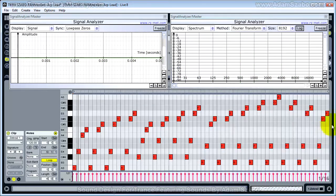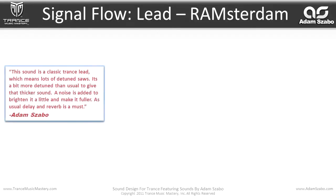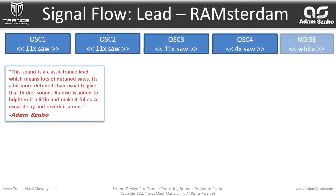Let's go ahead and walk through the sound map. Adam Sabo says this sound is a classic trance lead, which means lots of detuned saws. It's a bit more detuned than usual to give that thicker sound. A noise is added to brighten it a little and make it fuller. Delay and reverb is a must, and you could hear that long reverb tail in the demo. This patch uses four oscillators plus a noise generator.